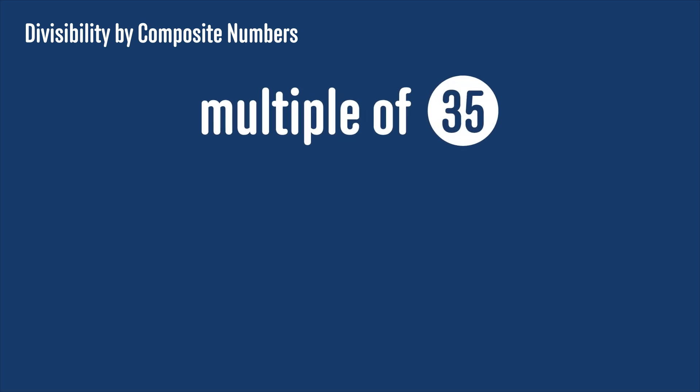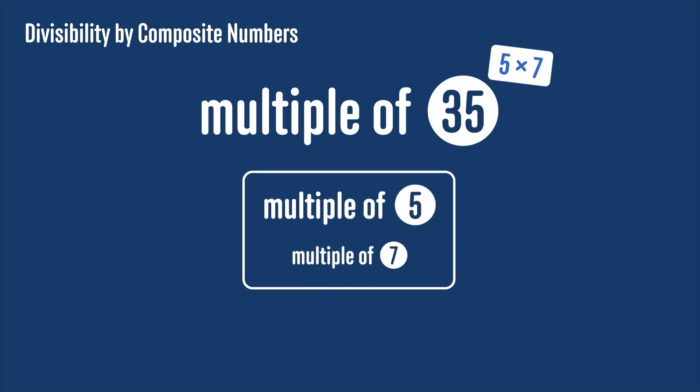How can you check if a number is divisible by 35? Well, 35 is 5 times 7, so we can just check if the number is divisible by 5 and by 7.